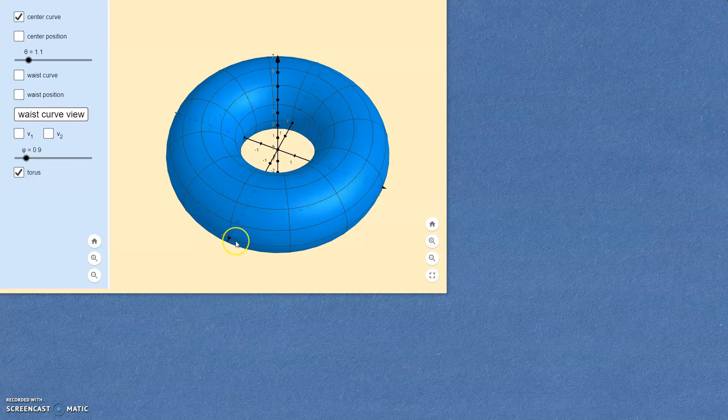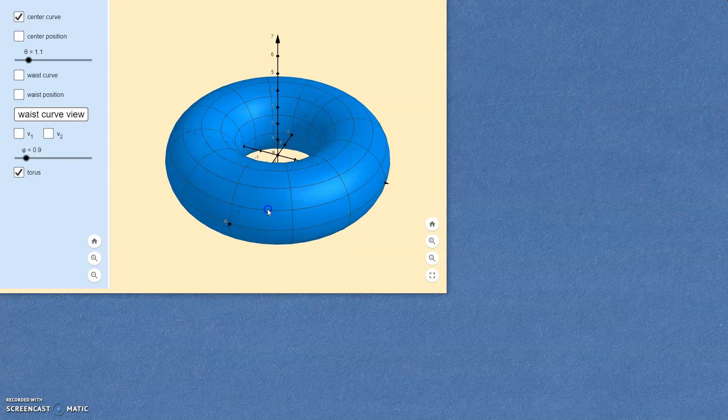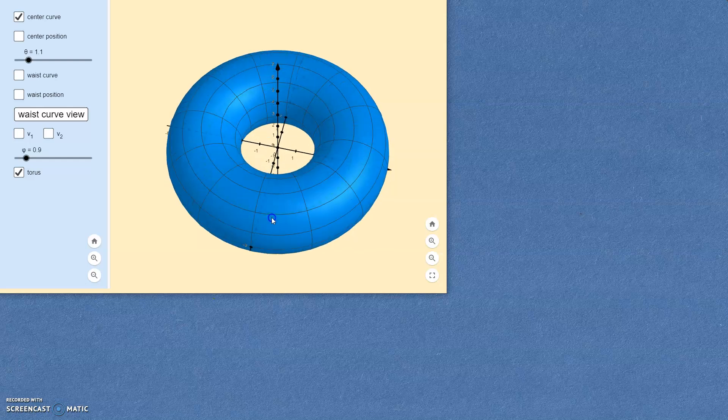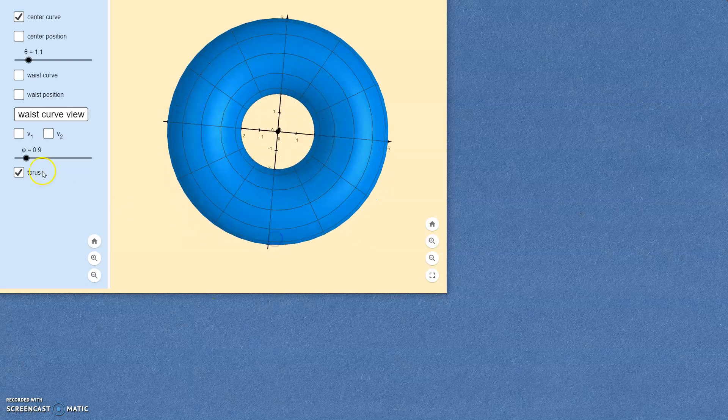I want to show you how to parameterize a torus. A torus is seen here in a GeoGebra window. It is a donut shape.